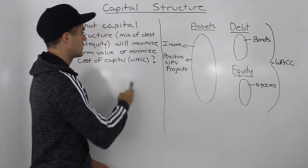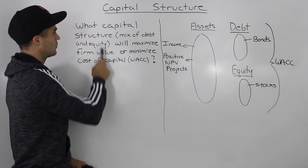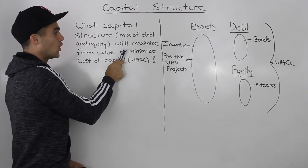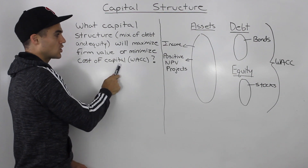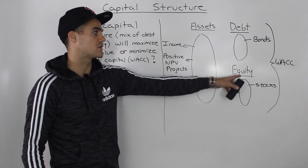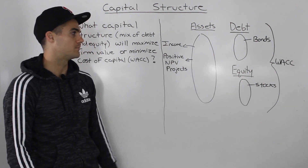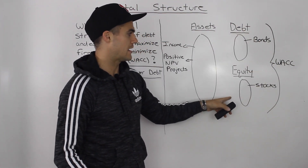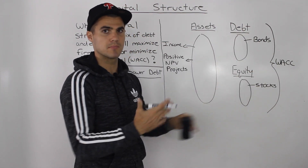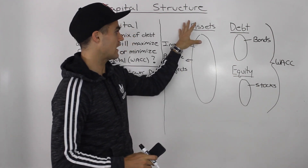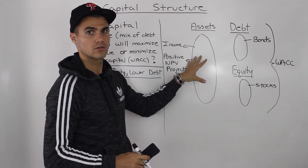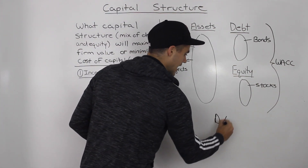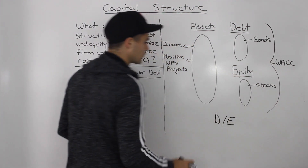So we can add on to our question: what capital structure — what mix of debt and equity — will maximize firm value or minimize the weighted average cost of capital? Notice how we can play around with the right side of the balance sheet and change the mix of debt and equity without affecting the left side at all, keeping the assets consistent. We can always change the debt-to-equity ratio whenever we want.